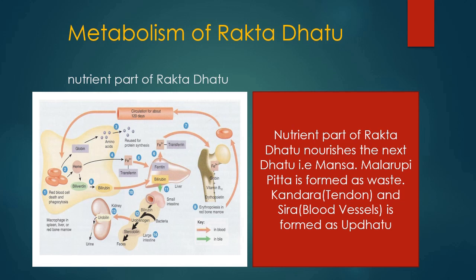Metabolism of Rakta Dhatu: During the metabolism of Rakta dhatu, the nutrient part nourishes the next dhatu, i.e. Mamsa dhatu, and Malrupi Pitta is found as mal, while Kandara and Sira are produced as upadhatu. Malrupi Pitta may be considered as bilirubin, which is formed as a breakdown product of RBC. Rakta kshaya (decreased quantity) or Rakta vriddhi (increased quantity) are directly reflected through the condition of the Sira — looseness of Sira in Rakta kshaya and fullness of Sira in Rakta vriddhi. Embryologically, both blood vessels and blood cells have the same origin, so in Ayurveda, Sira have been considered as upadhatu of Rakta.